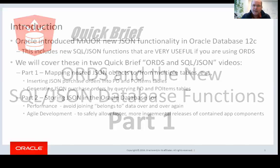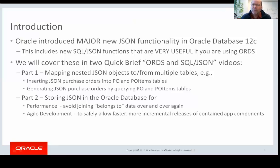What has happened is, in Oracle Database 12c, Oracle introduced some very significant new JSON capabilities in the database. In particular, this includes a number of new SQL JSON functions that are very useful if you are using ORDS. I'm going to be going through those in two parts. First, in this quick brief, I'm going to be talking about mapping nested JSON objects to and from multiple relational tables. I'll work through an example where I have a JSON purchase order, which is a nested object containing purchase order items nested within that larger purchase order object, and I'm going to be inserting those into two relational tables: a top-level purchase order PO table and a child PO items table. I'm also going to be talking about doing the reverse — generating that JSON purchase order nested object by querying the PO table and PO items table.